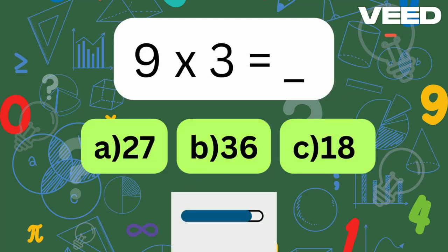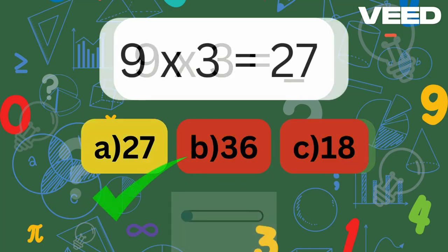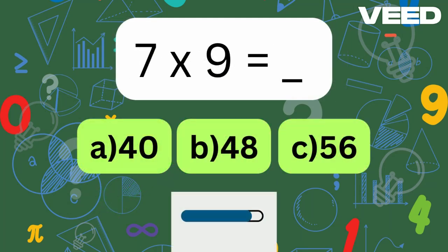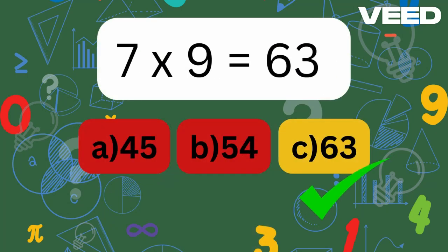9 times 3 is... 9 times 3 is equal to 27. 7 times 9 is... 7 times 9 is equal to 63.